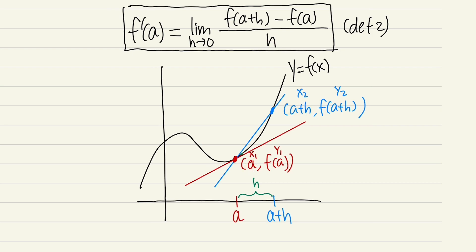To bring the blue point closer and closer to the red point, we need h to be as small as possible. When there's no distance they are close to each other — this is something you can say to your crush: I wish we have no distance so we can be together. That's it — see you guys in the next video.